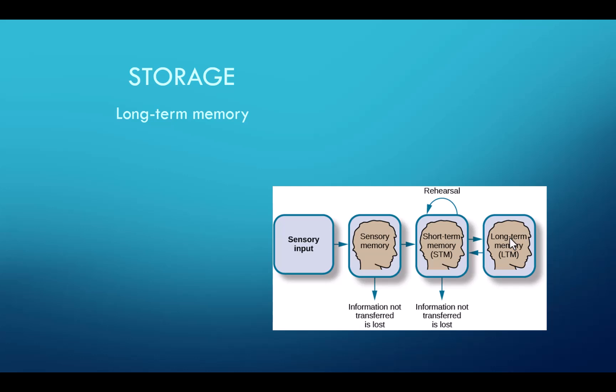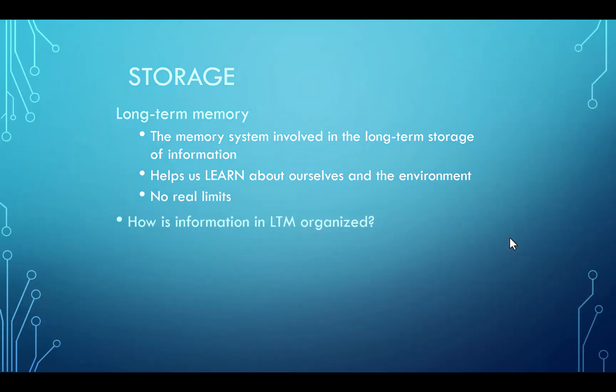So long-term memory is the long-term storage of memory. It's the information that we retrieve later on that helps us learn about ourselves, about our environment. It tells us about our place and position in the world. And theoretically it has no real limits. Now, since we can remember so much information, it must be organized in some way that helps us retrieve it. And one of the ways we've already talked about are semantic categories. We encode things semantically and we have semantic categories, like that last activity where we saw we had animals, occupations, names, and vegetables.